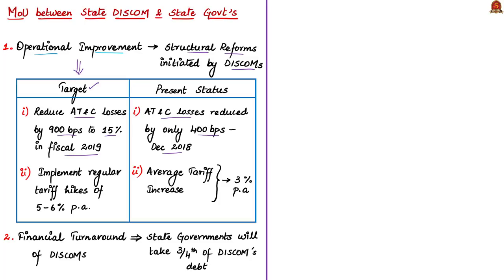The second target was to implement regular tariff hikes for power at the range of 5-6% per annum. But currently, the average tariff increase is at only 3% per annum. Thus, CRISIL notes that Discoms should start focusing on structural reforms as soon as possible.